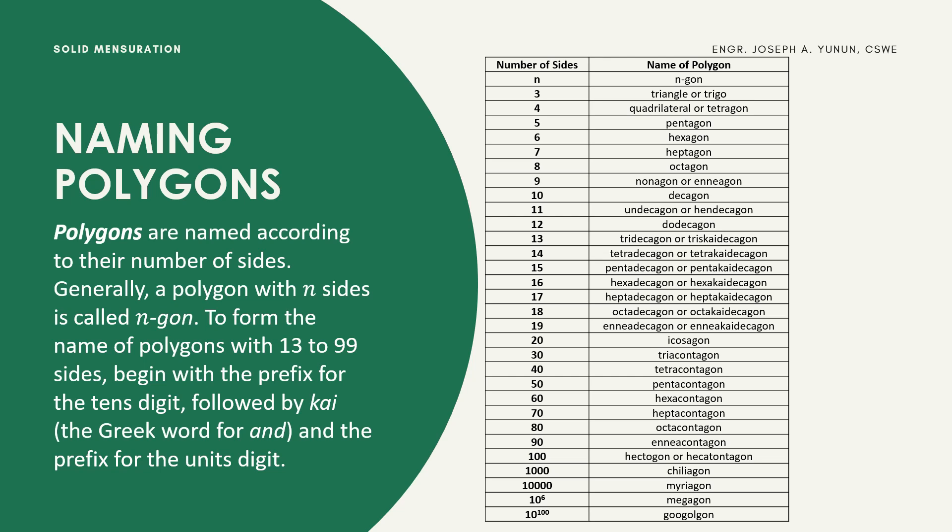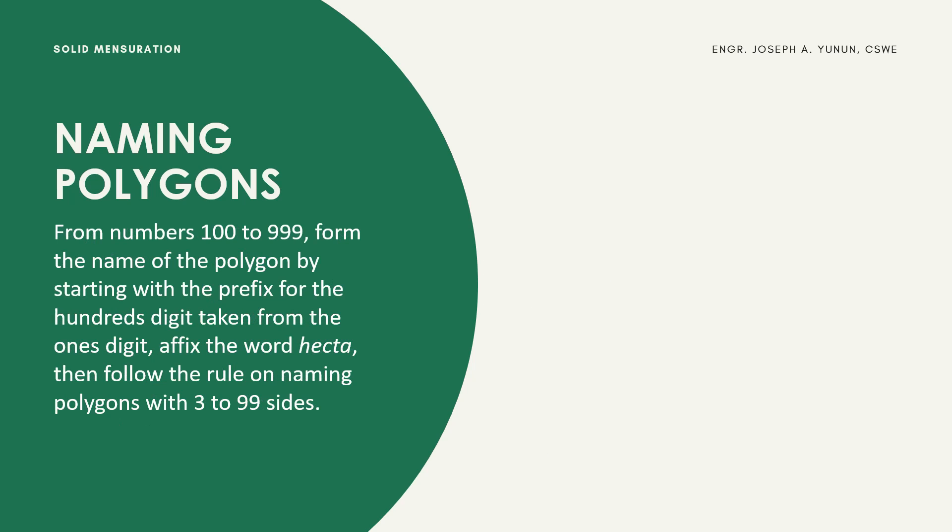For example, if you have six sides the polygon is called a hexagon. If you have 17 sides, it is a heptadecagon — or heptakaidecagon, where 'kai' is the Greek word for 'and'. For 70 sides, it is a heptacontagon. For 10,000 sides, it is called a myriagon.